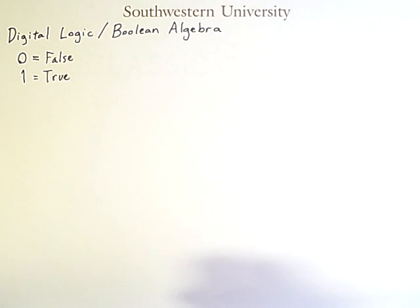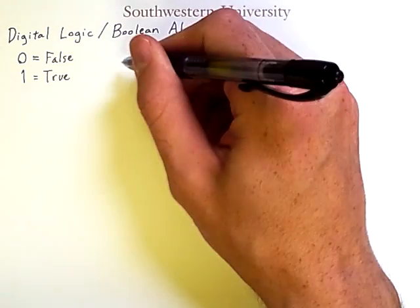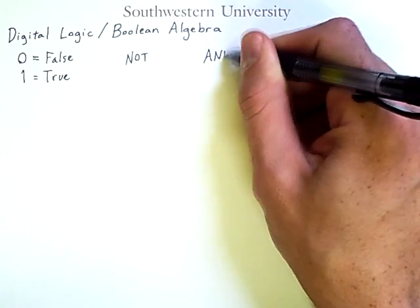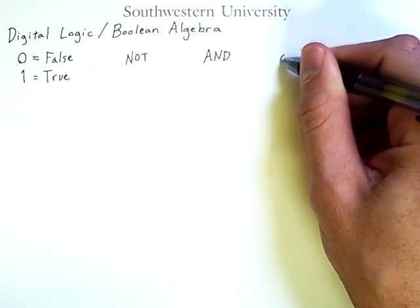Three Boolean operations that you are no doubt familiar with from high-level programming languages are NOT, AND, and finally, OR.